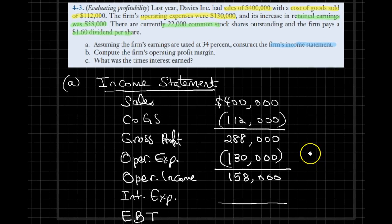We need to think carefully about the remaining givens. We've already used sales, cost of goods sold, and operating expenses. One thing we were given is the total number of shares outstanding and dividends per share. We have 22,000 shares outstanding and each one will receive $1.80 in dividends, so we should be able to calculate total dividend payments.